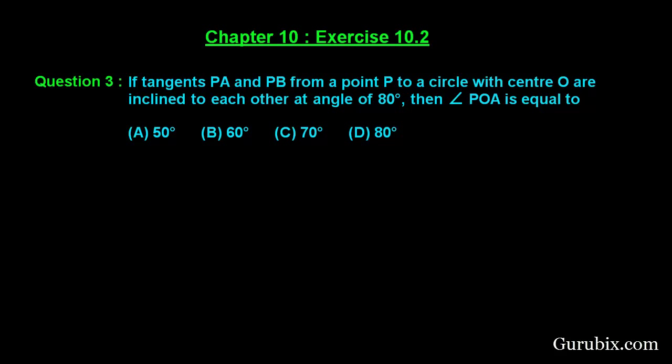Welcome friends. Let us solve question number 3 of Exercise 10.2 of Chapter 10. The question says: if tangents PA and PB from a point P to a circle with center O are inclined to each other at an angle of 80 degrees, then find the angle POA. We are given four options to choose from. This is a very easy question, let us solve it.